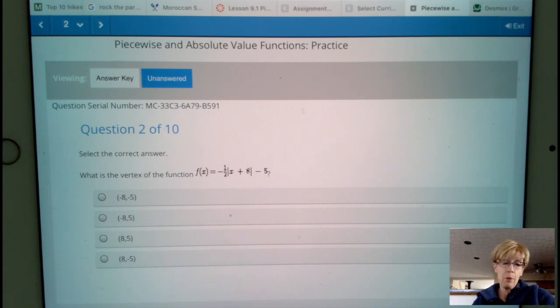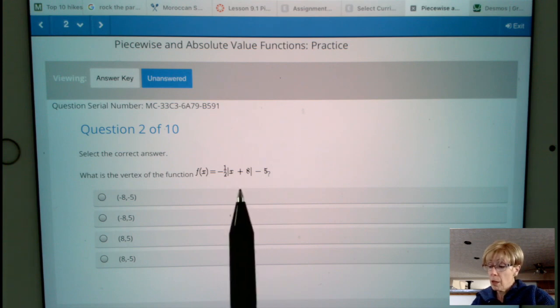The vertex of this function is going to be, change the sign, so it's going to be negative 8, keep the sign, negative 5. So negative 8, negative 5.